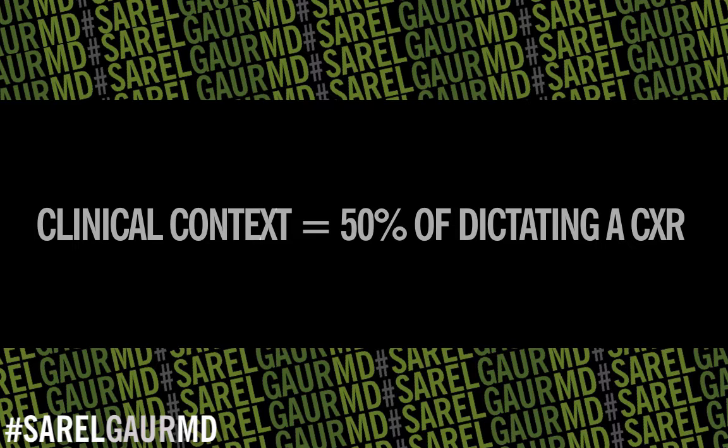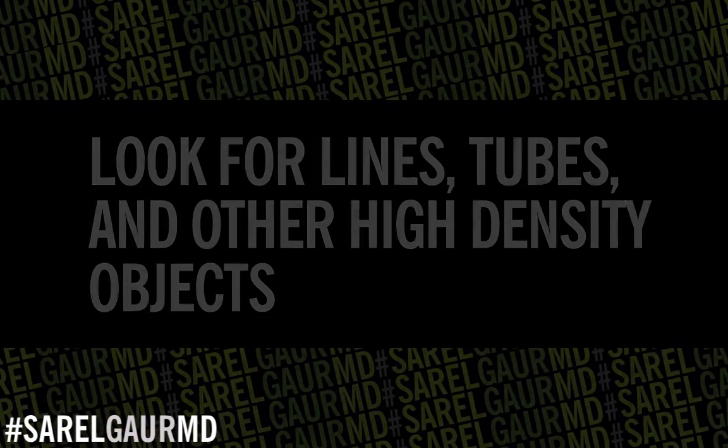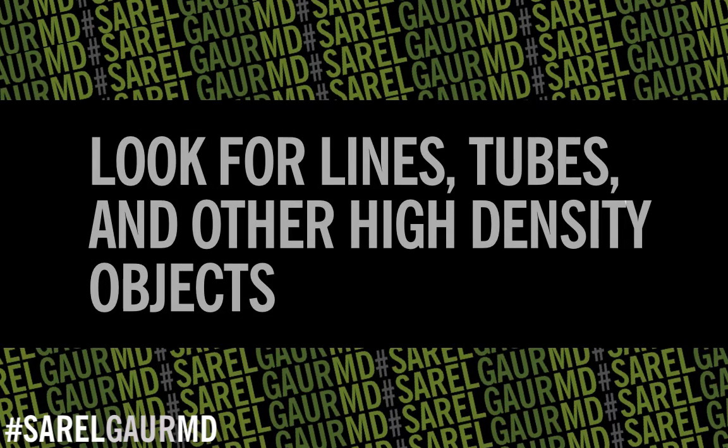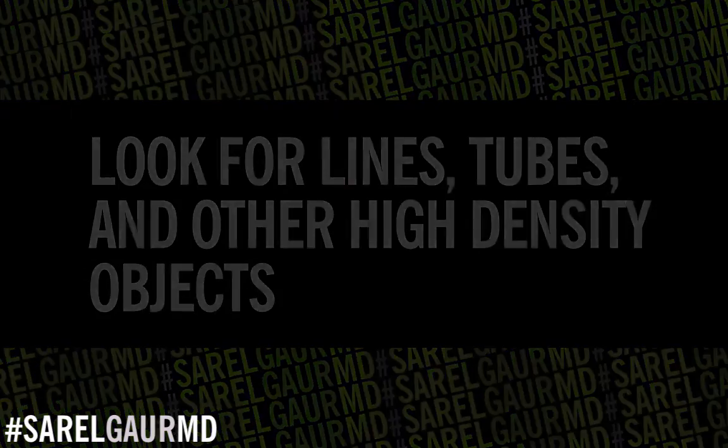Once I pull up the chest x-ray, the first thing I do is some accounting. I look for high-density objects such as lines and tubes — including sternotomy wires, prosthetic heart valves, and things of that nature. Importantly, I'm looking for malposition: an ET tube pushed too far, a central line not properly positioned, or a nasogastric tube going into the lung.